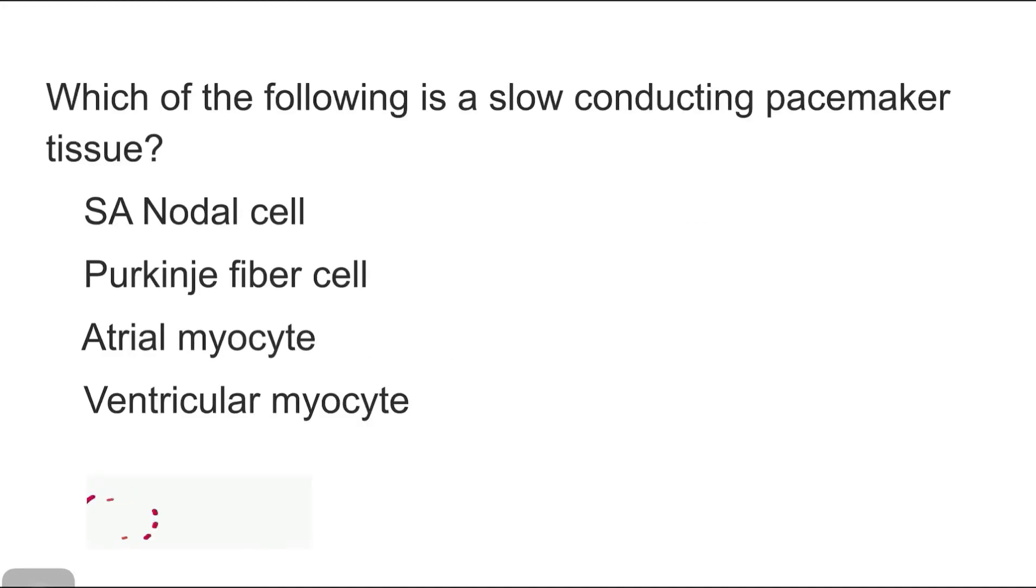So the first question is which of the following is a slow conducting pacemaker tissue. Options are SA nodal cell, Purkinje fiber cell, atrial myocyte, and ventricular myocyte. For this we should know how the pacemaker tissues are classified. The pacemaker tissue is classified on the basis of conduction into slow conducting pacemaker tissue and fast conducting pacemaker tissue.